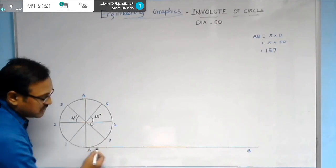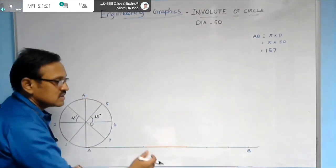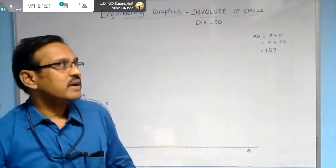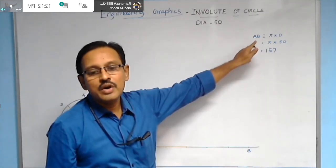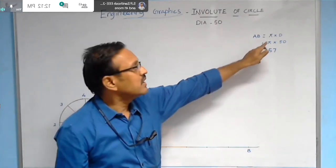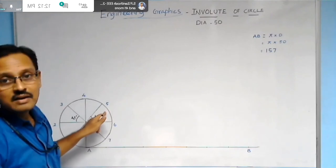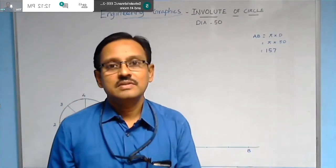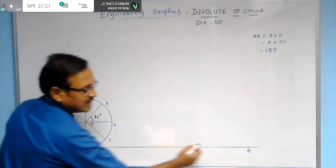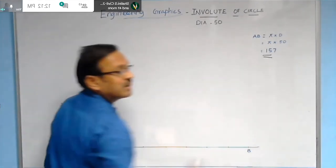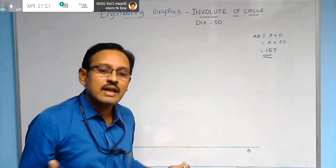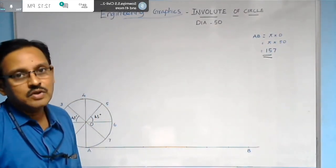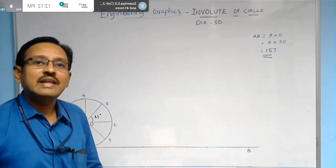Draw a horizontal line from A to B. The length of AB equals the circumference of the circle: π × d = π × 50 = 157mm. So draw a horizontal line AB equal to 157mm.